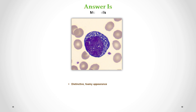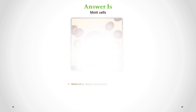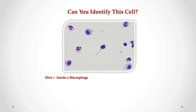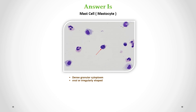Correct answer is mot cell. We can see its distinctive foamy appearance. Dense granular cytoplasm, also oval or irregularly shaped. I hope you guys learned something new from this video.